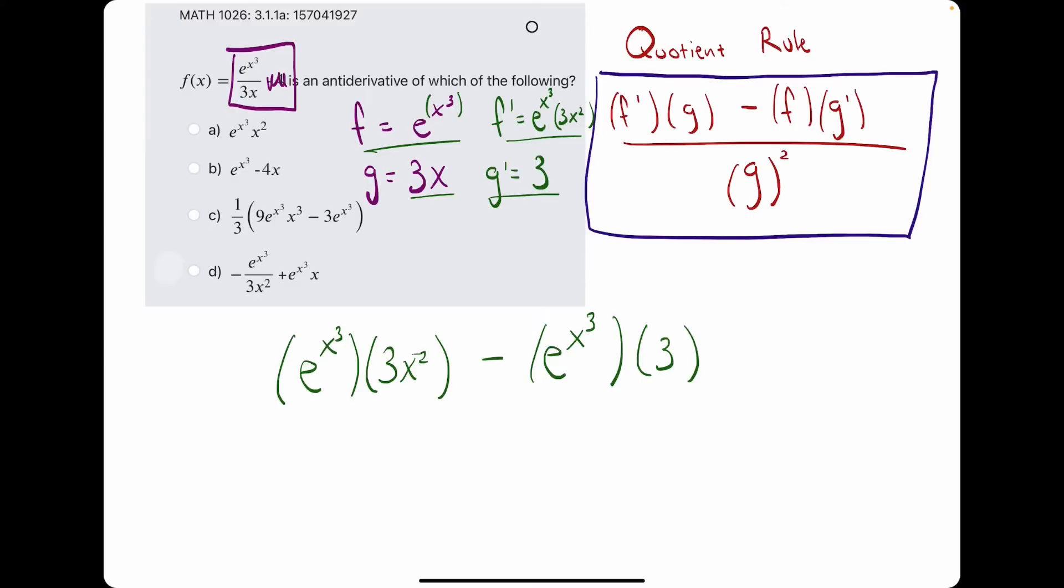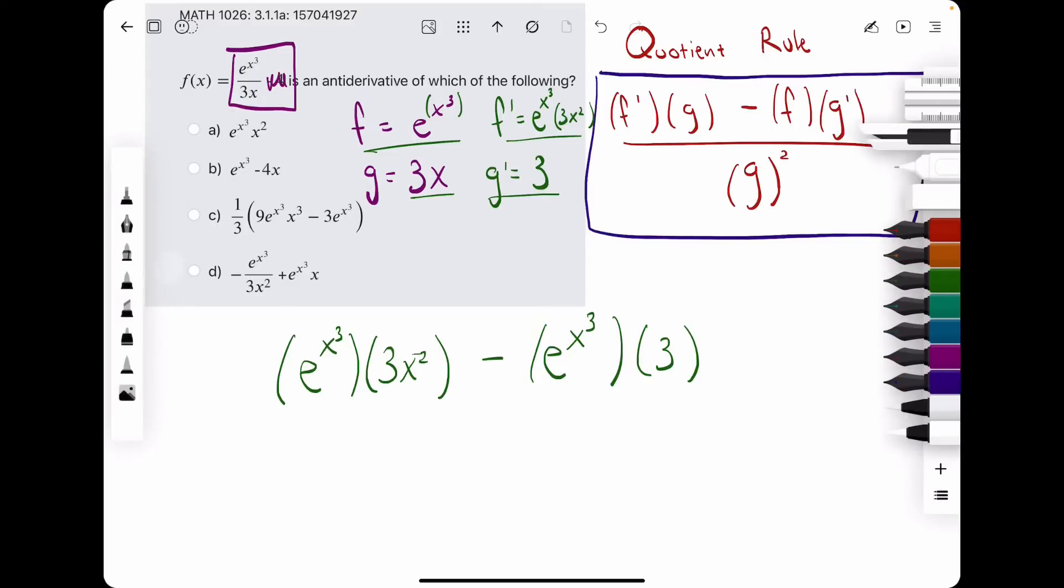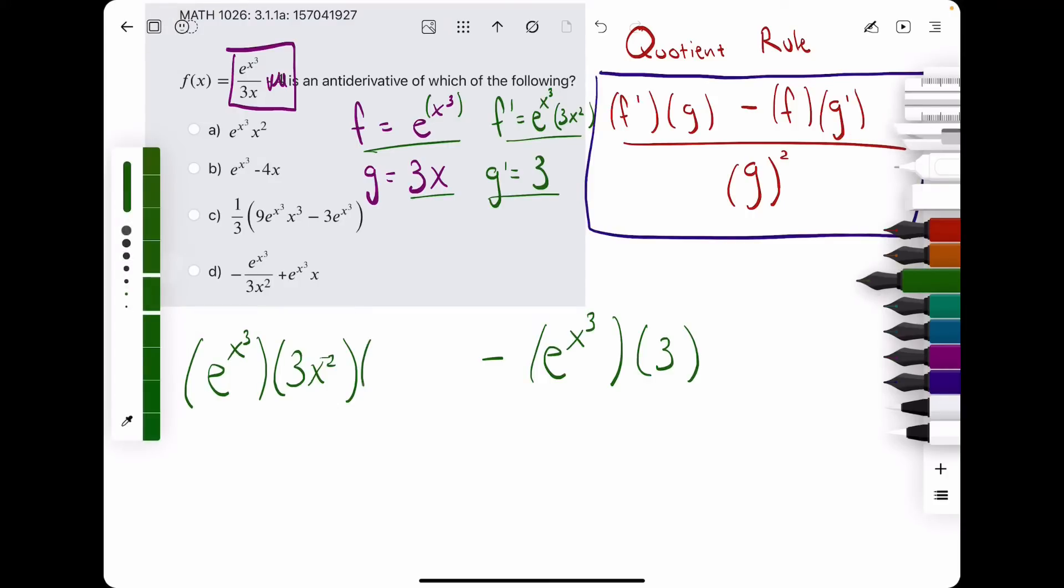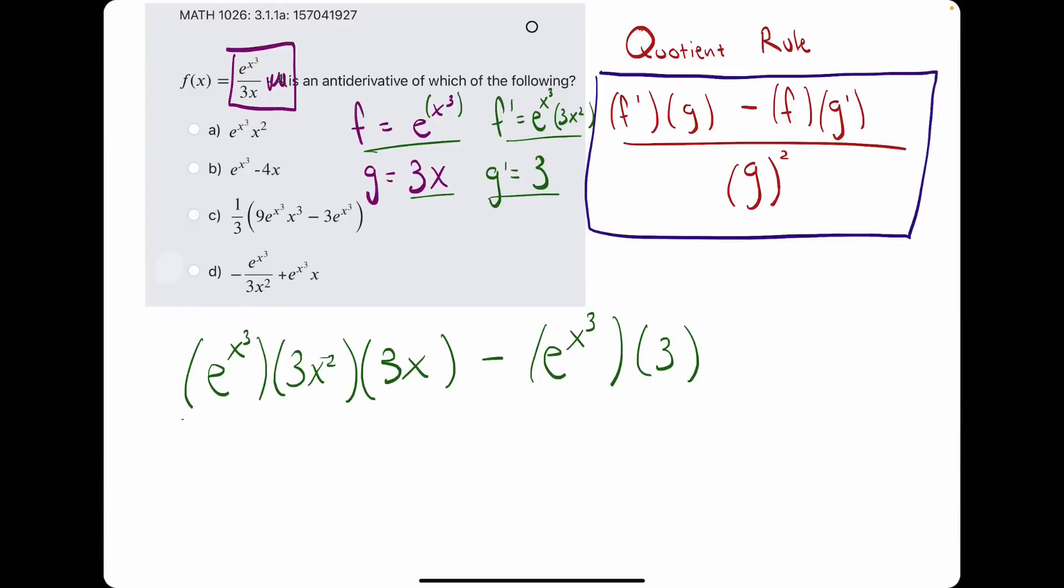And, I almost forgot, there's a g after the f prime. So, let's make some room. It should have been f prime times g. All right. And then, all of this will be divided by g squared. So, we'll have 3x squared.